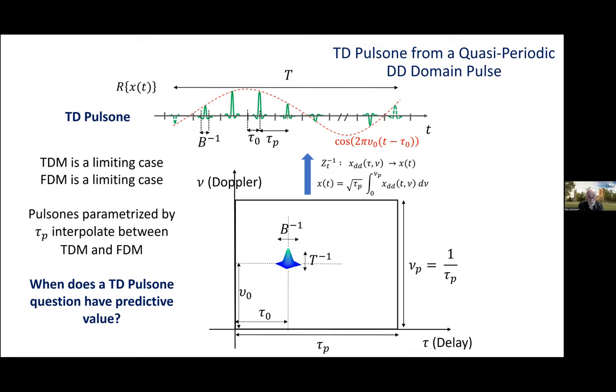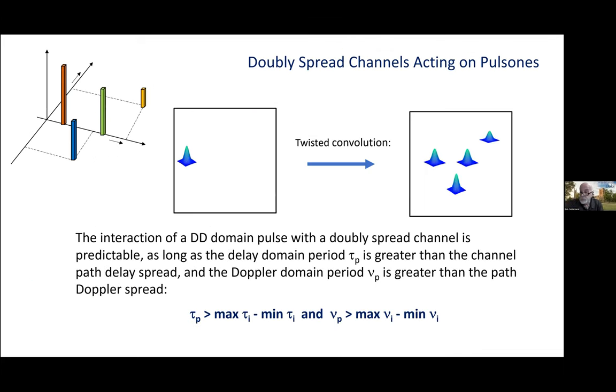Similarly, frequency domain multiplexing, that's a limiting case too. As the delay period tau_p shrinks, only the tone remains. So, pulsones parameterized by tau_p and nu_p, they interpolate between TDM and FDM. And we're going to think about the best value of tau_p to choose.